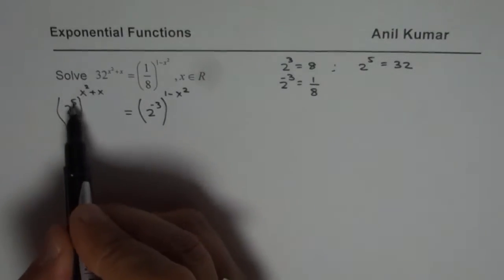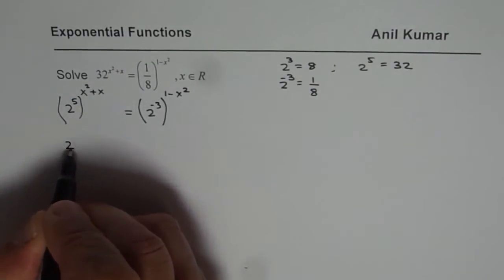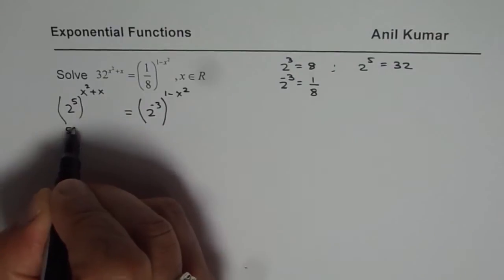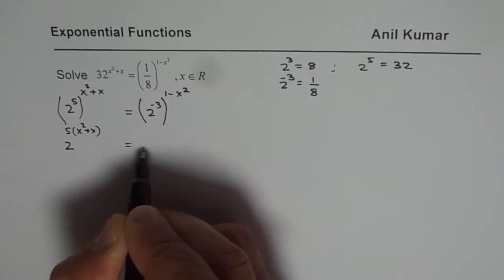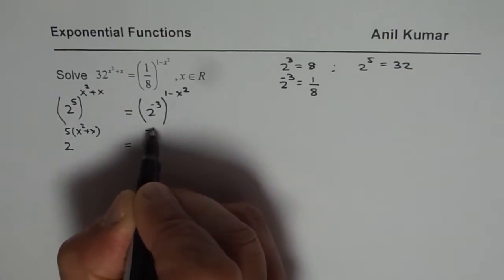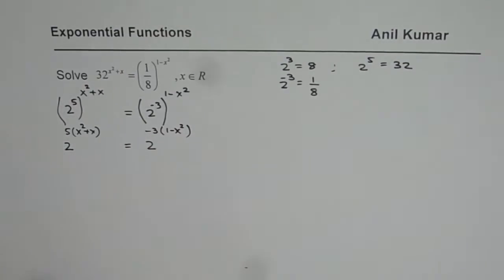Now you can use the product rule here. So you get 2 to the power of 5 times x square plus x on the left side. On the right side you get 2 to the power of minus 3 times 1 minus x square. That is how you get left and right side of this equation.